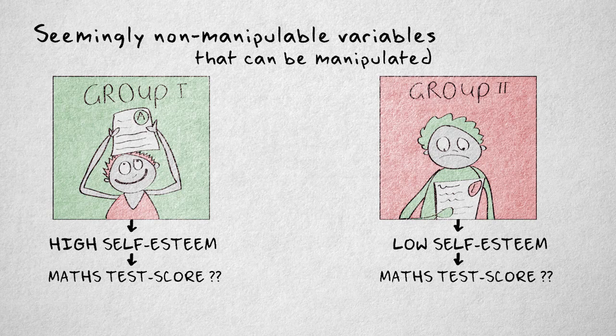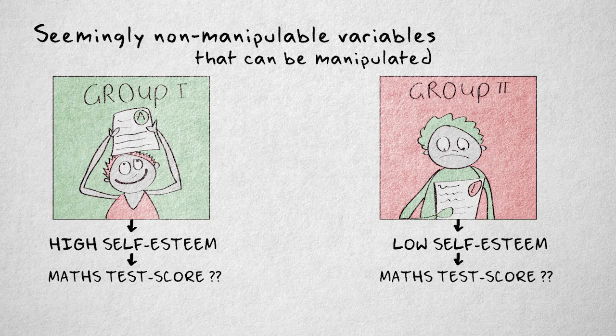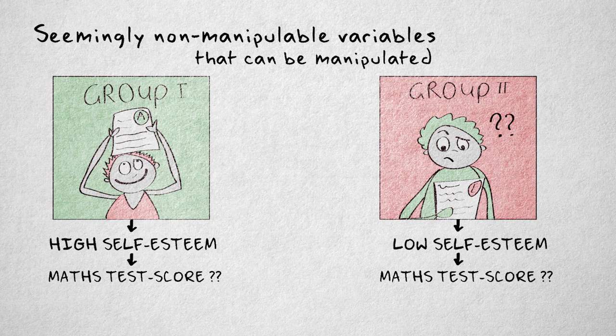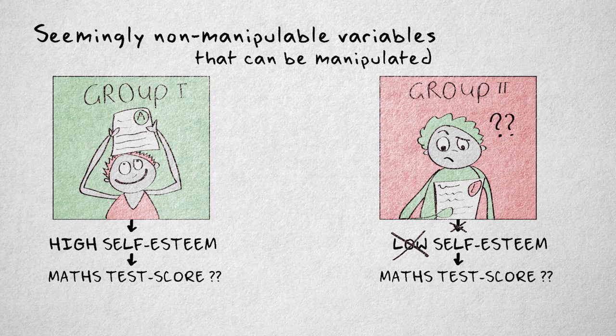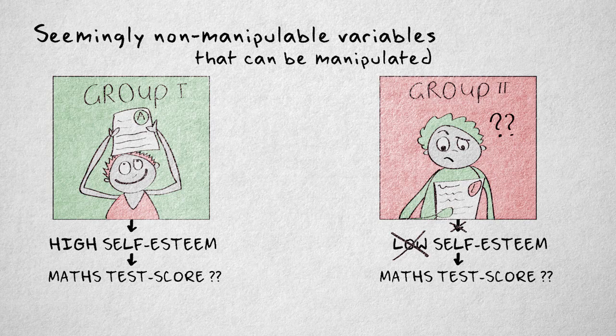It's important to realize that manipulation can fail. Maybe the test was very easy, and therefore participants in the experimental condition didn't believe their scores were low, leaving their self-esteem unaffected. We can check whether the intended level of the independent variable was actually experienced by measuring it. This is referred to as a manipulation check.